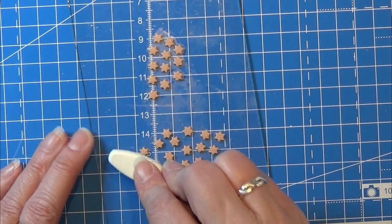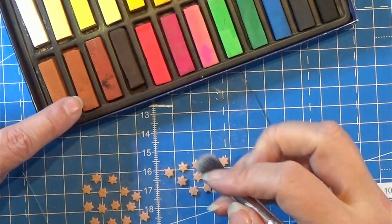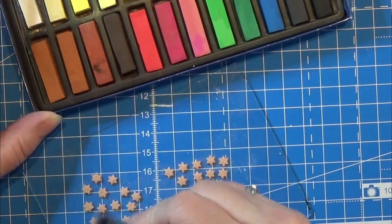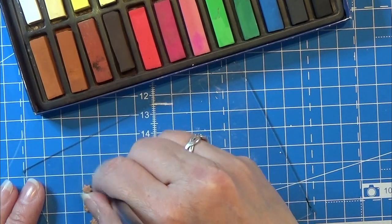I'm quickly using a toothbrush to give all these small cookies some texture and then I'm using my soft pastel, this brown color, to give these cookies a baked look.